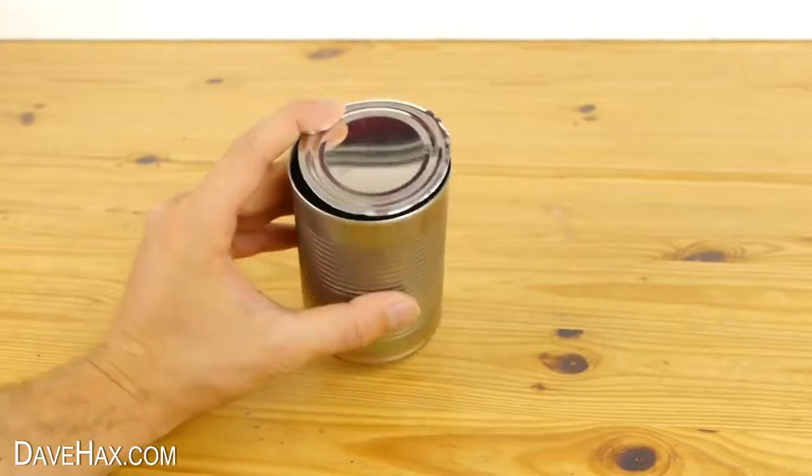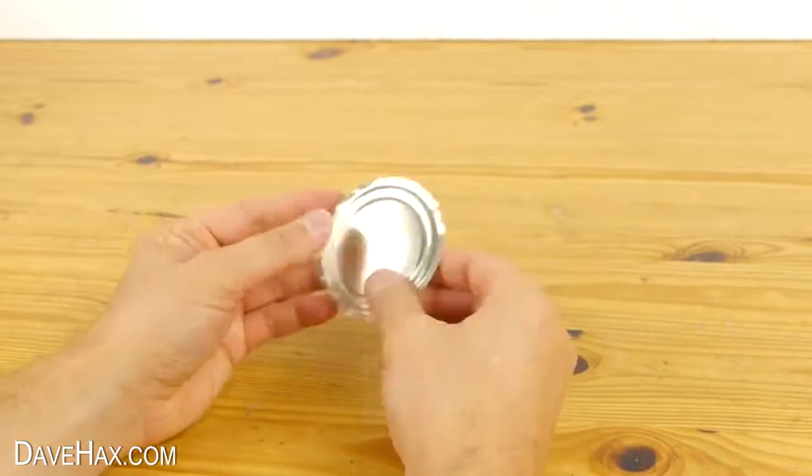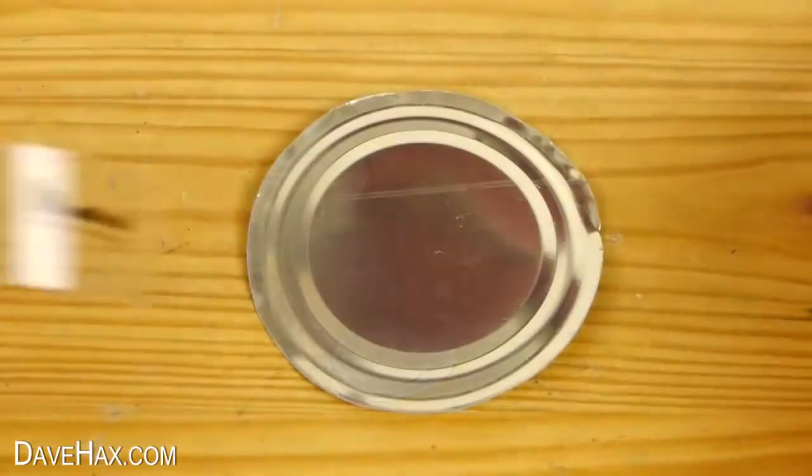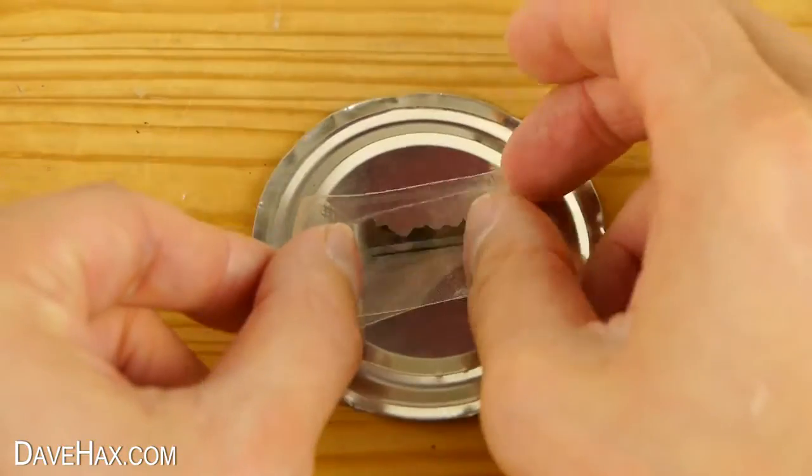Next, we're going to take the lid from a can of food and lay it on the table. Then take your tape and stick it onto the lid.